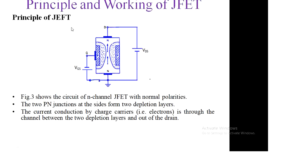JFET is a voltage control device, so the output drain current is controlled through VGS. For the N-channel JFET, the external voltage applied between gate and source is in reverse bias, while between drain and source it is in forward bias. This figure shows the N-channel JFET with normal polarities, where the two P-N junctions at the sides form two depletion layers. When a negative voltage is applied at the gate, it is in reverse bias.